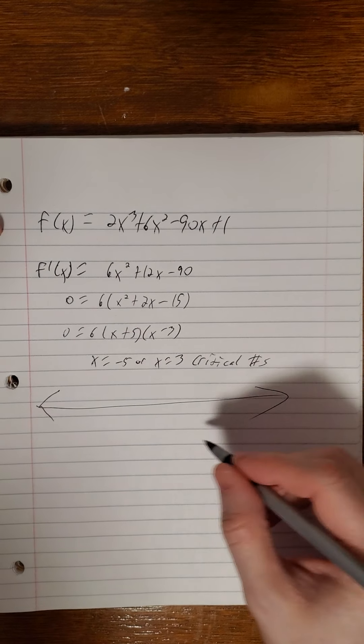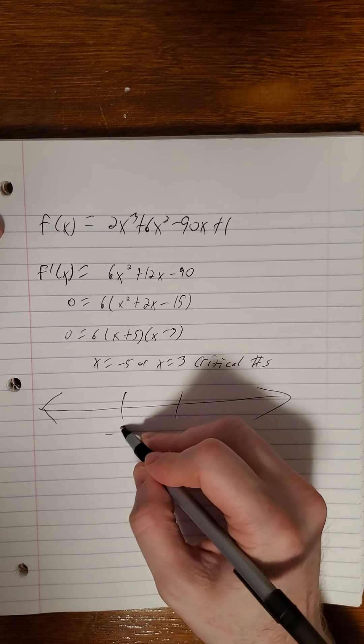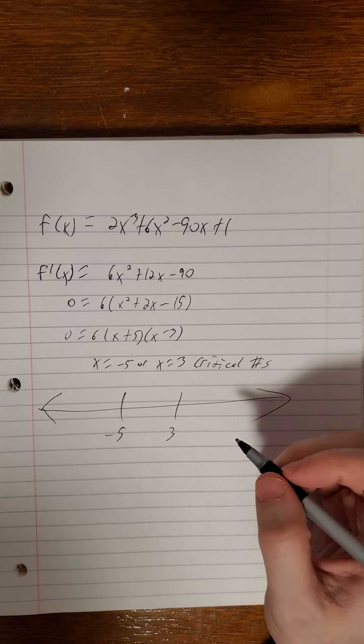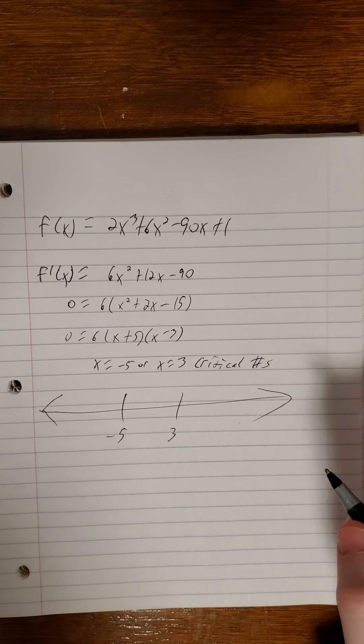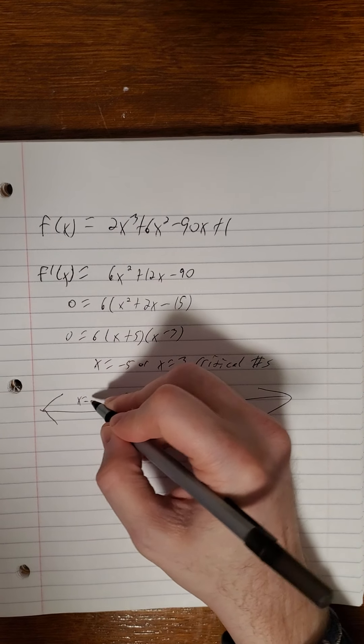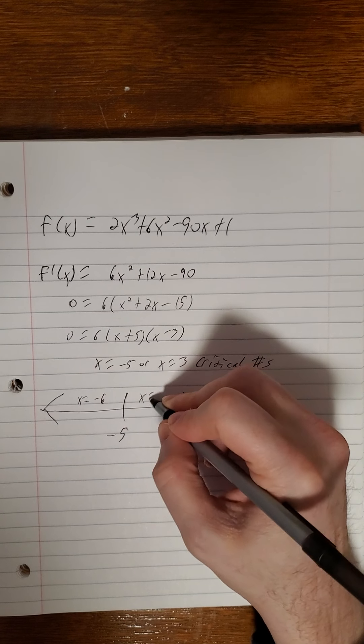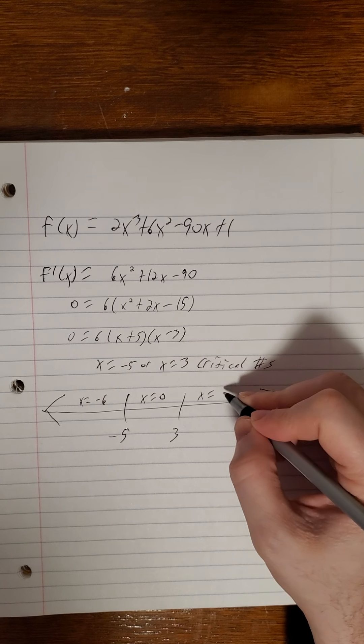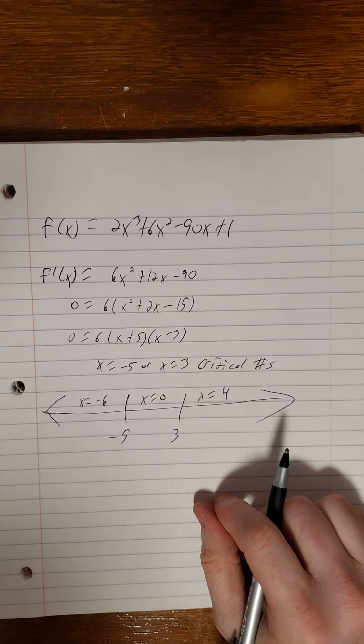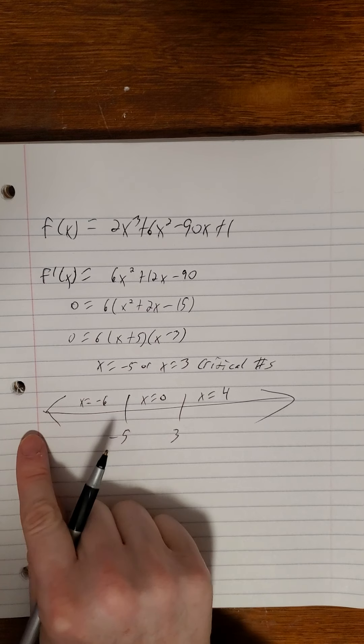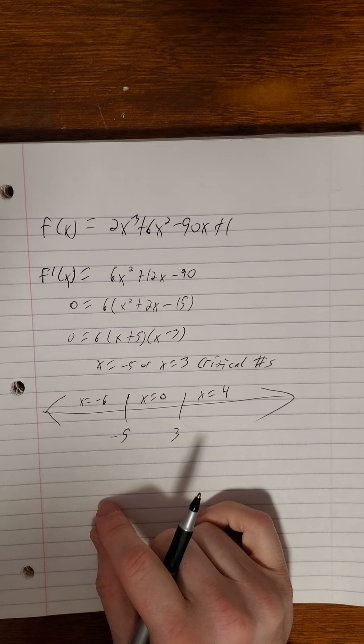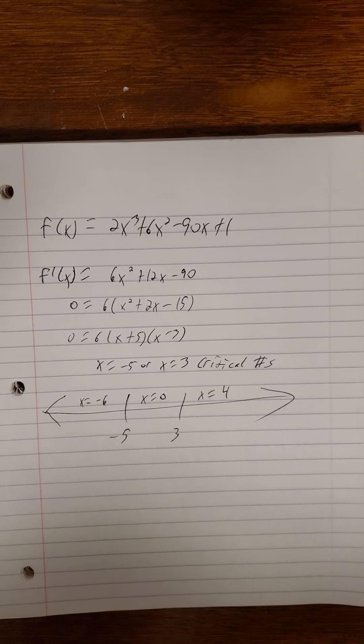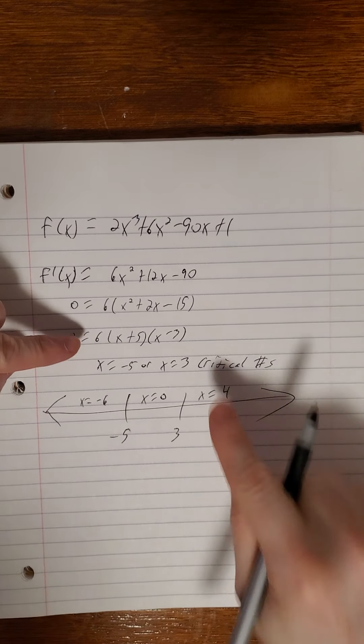So I'm going to draw my quick sketch here. Negative 5 is to the left of 3 on the number line. So now I just need one guinea pig per section. So in this case three of them. Negative 6, 0, and I don't know 4. You could have picked negative 10, 0, and 10, we'll get the same answer still. It'll just look different in between when we plug it in.